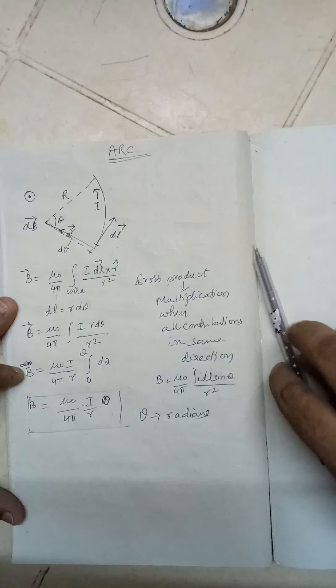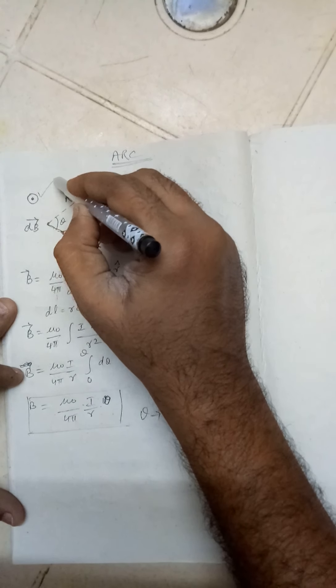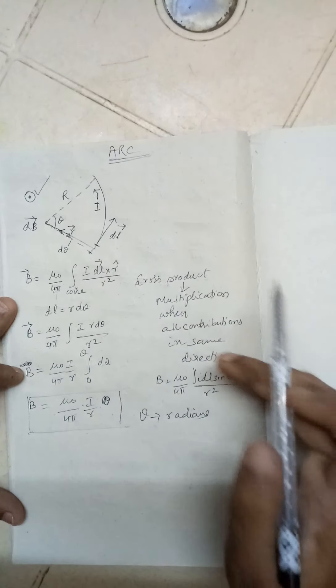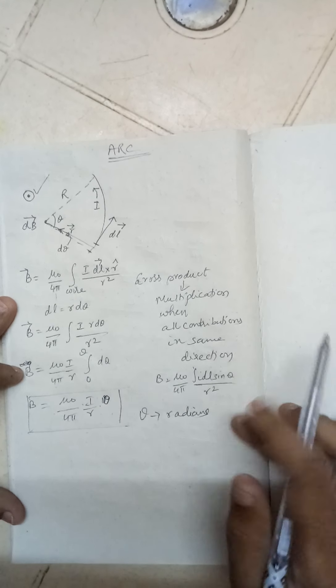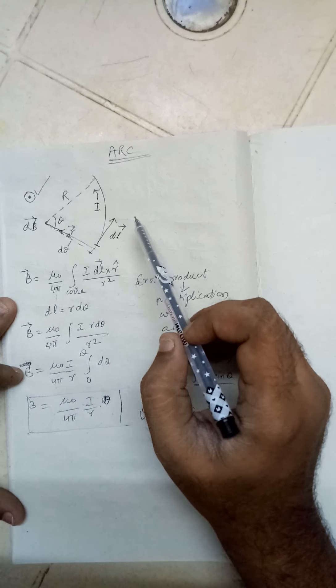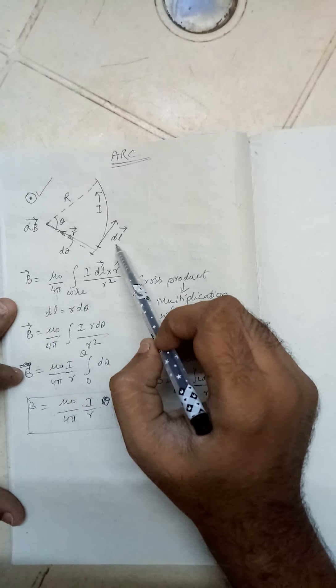So you can see that this is the direction, it is pointing towards you. And if you take any point, any small element, it will show the same direction. Here you can also see that the angle between this dl vector and r vector - it is radius and this is tangent. dl can be obtained by drawing a tangent and it is 90 degrees, so sin 90 will be 1.